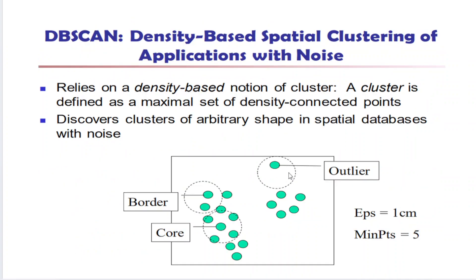Next, let's look at the DB scan algorithm. DB scan is completely based on the notion of density. A cluster is defined as a maximum set of density connected points. We can discover clusters of arbitrary shapes — U-shape, S-shape, or any shape — along with noise. There are three important point types: a core point, a border point, and an outlier point.